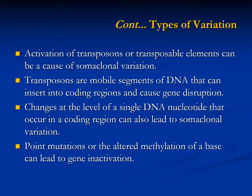Activation of transposons can also be a cause of somaclonal variation. Transposons, or transposable elements, are mobile segments of DNA that can insert into coding regions and cause gene disruption. In addition to these larger modifications of nuclear DNA sequence, changes at the level of a single DNA nucleotide that occur in a coding region can lead to somaclonal variation — for example, point mutations that result from a change in a single nucleotide, or the methylation of a base, can lead to gene inactivation.